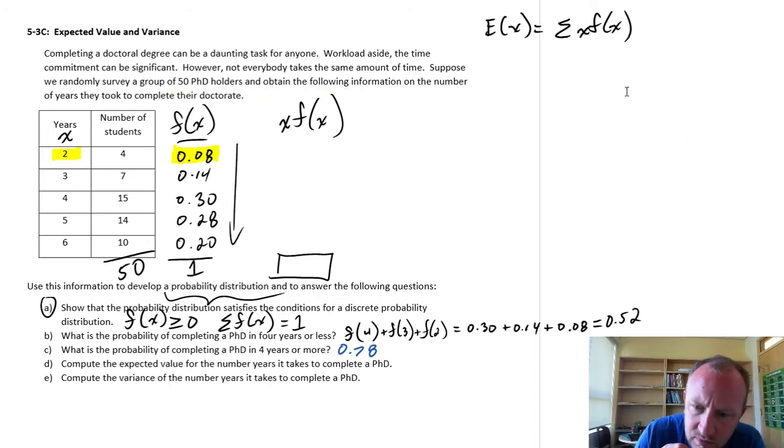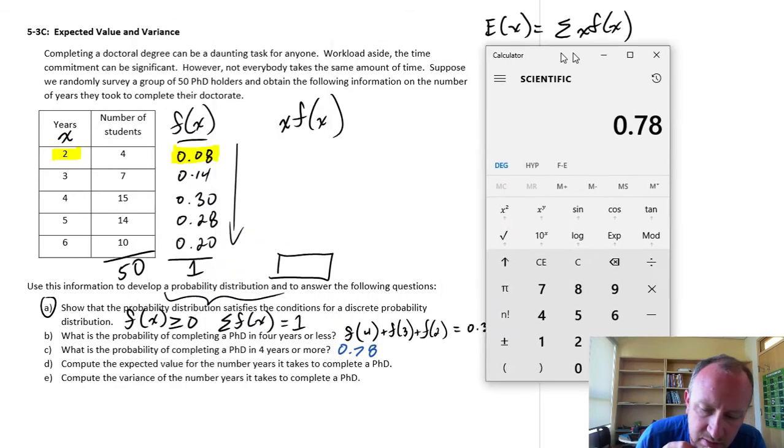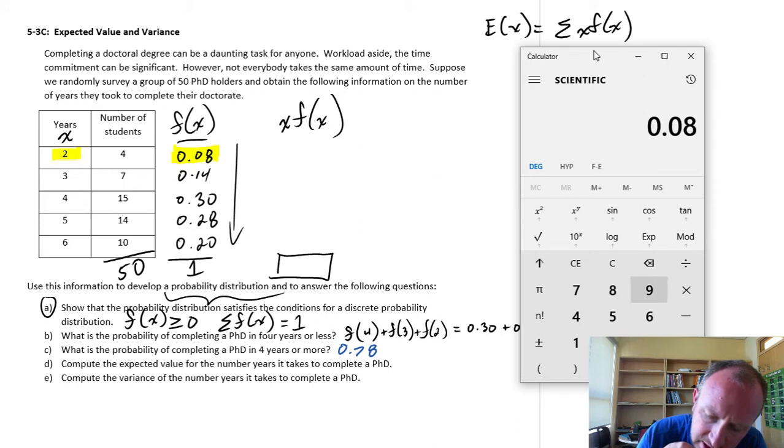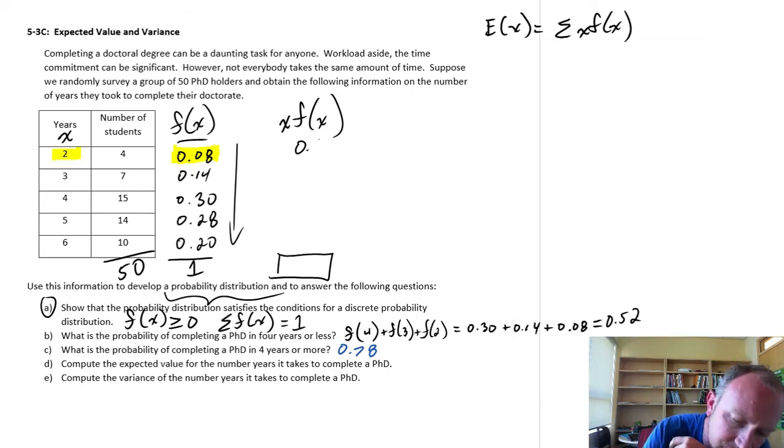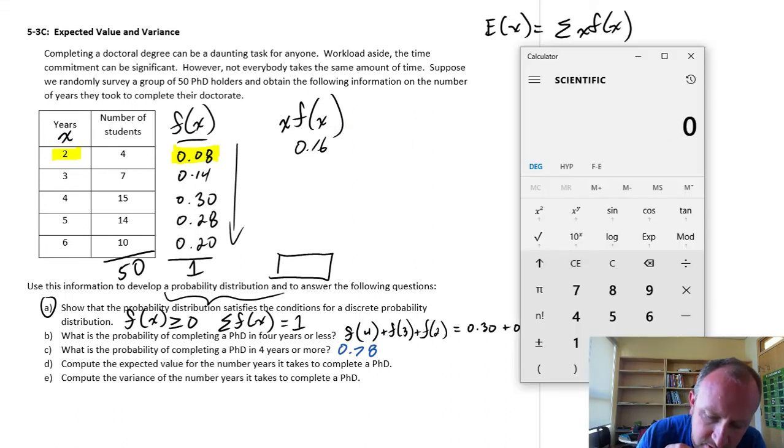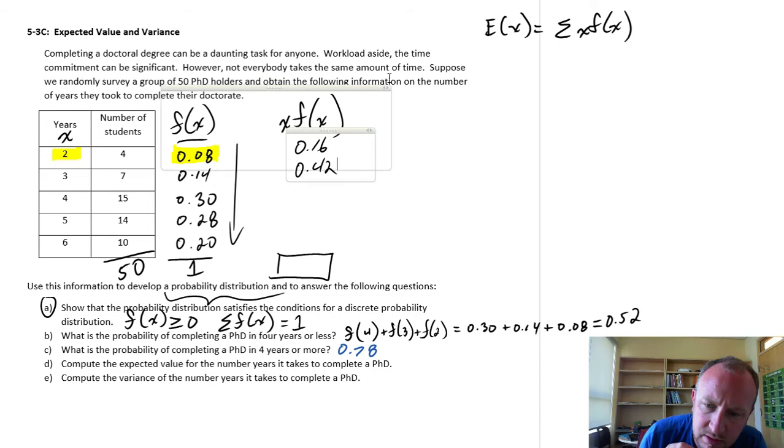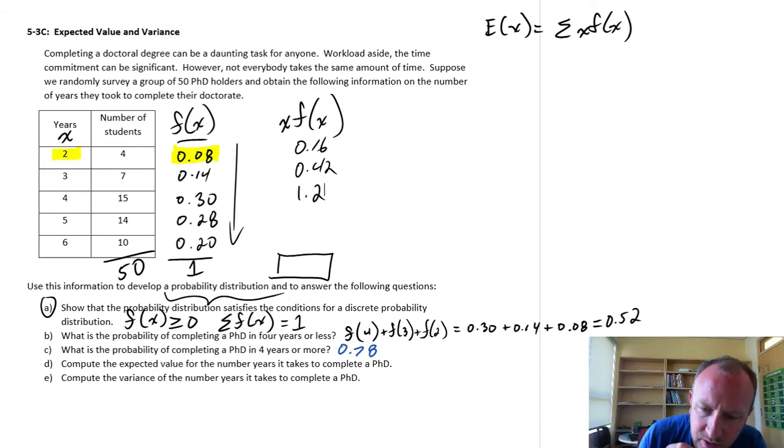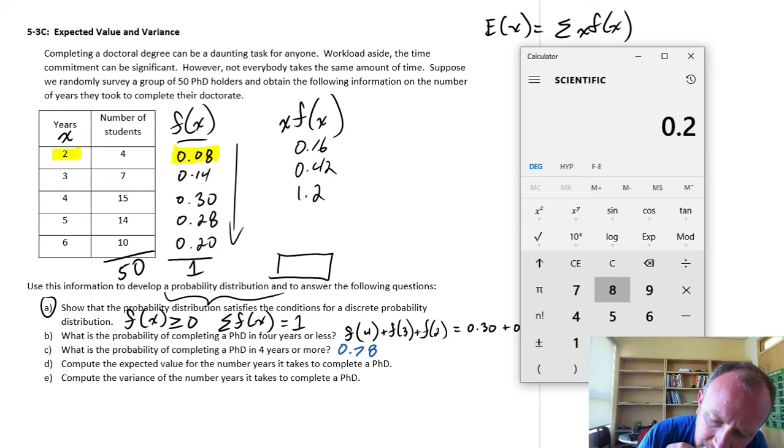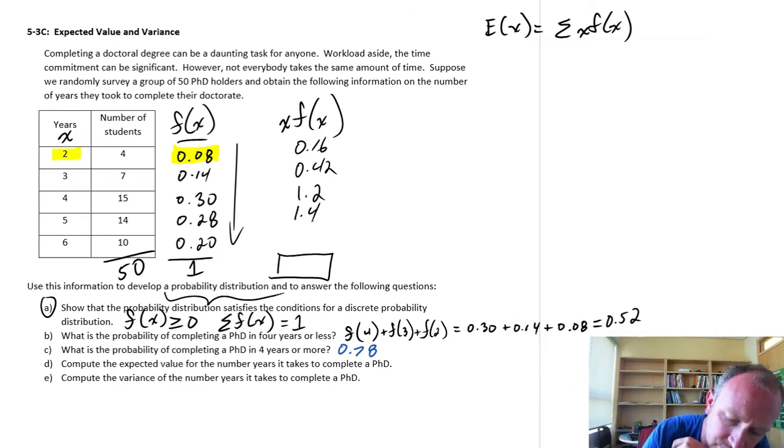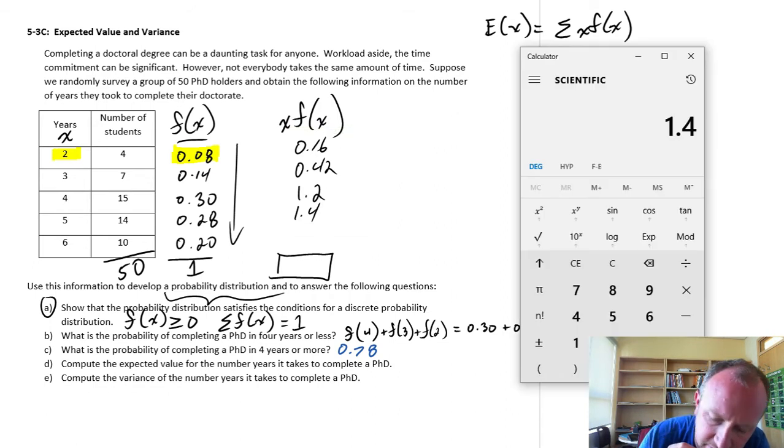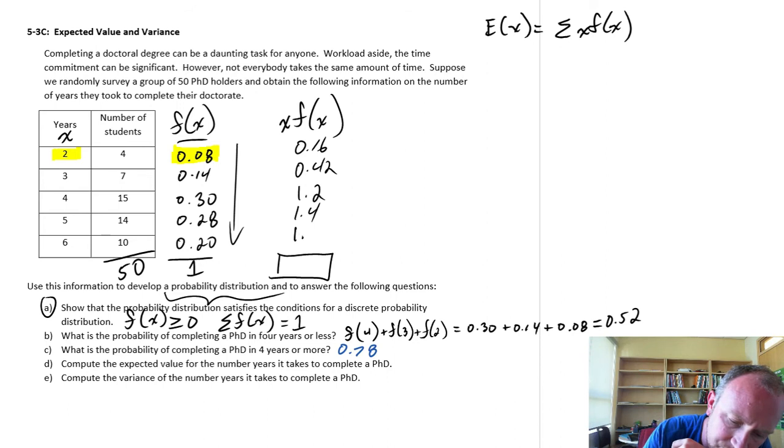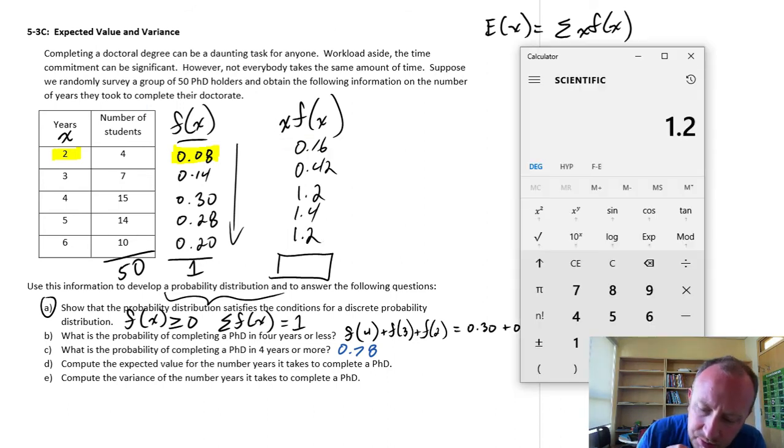For the first one, this is going to be 0.08 times 2, so 0.16. The next one, 0.14 times 3, 0.42. Our next one, we're at 4 years here, so that's 0.3 times 4, 1.2. This is the next one, we're at 5 years, so 0.28 times 5, 1.4. And finally, 6 years, 0.2 times 6, 1.2. And now we just simply add those together to obtain our expected value.